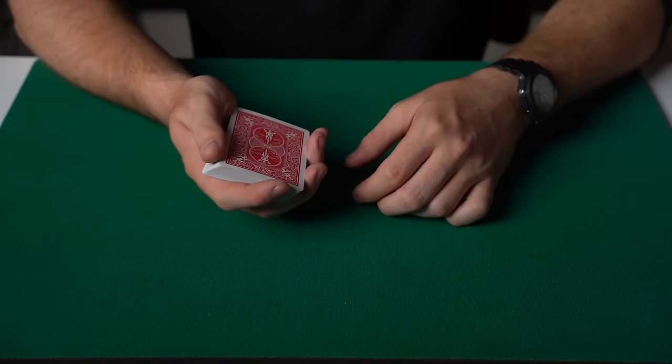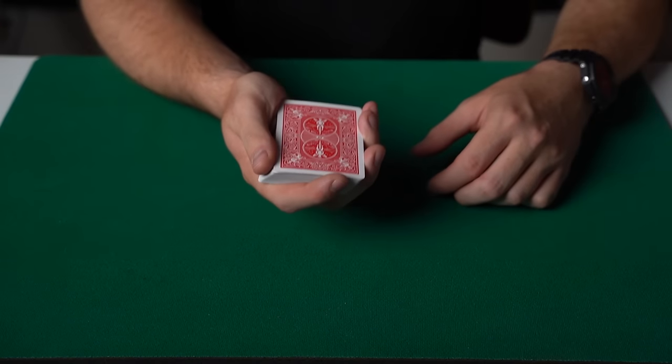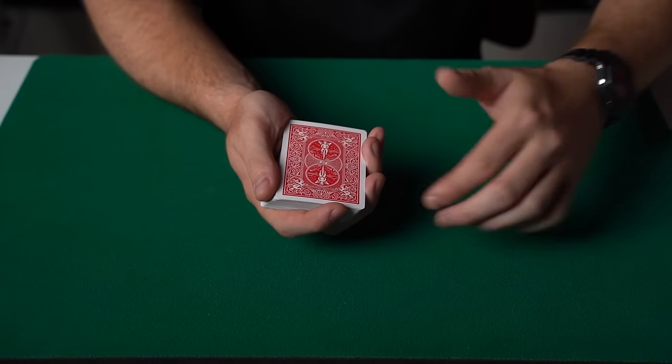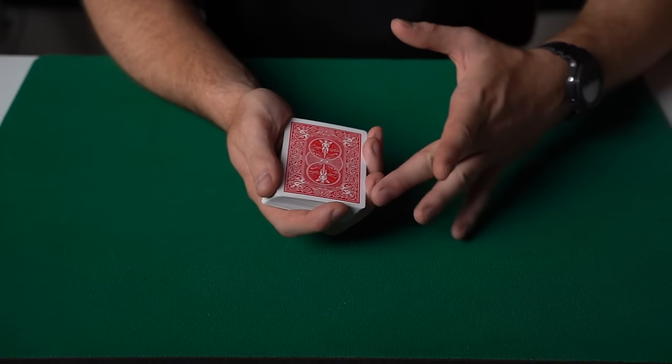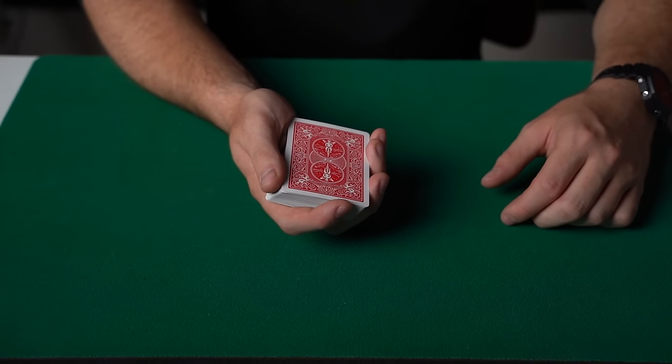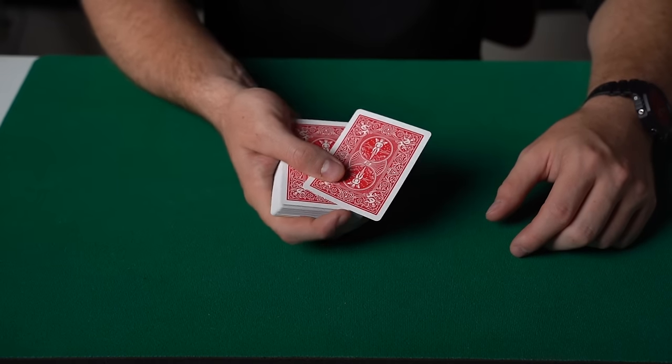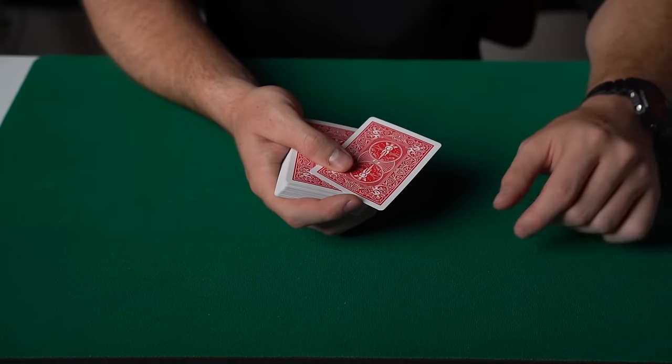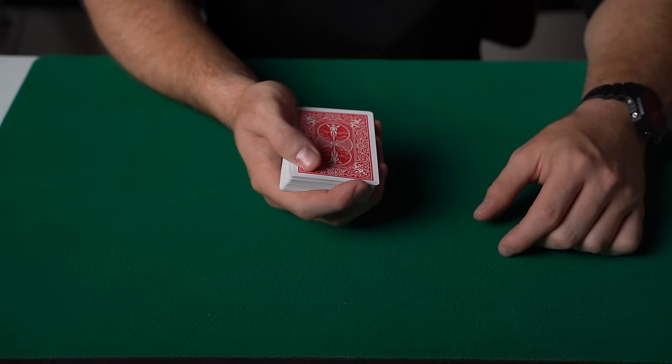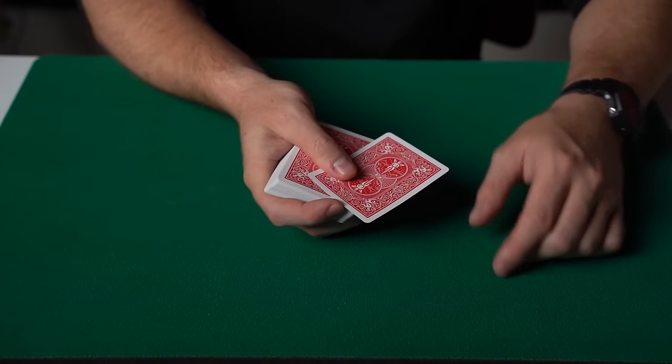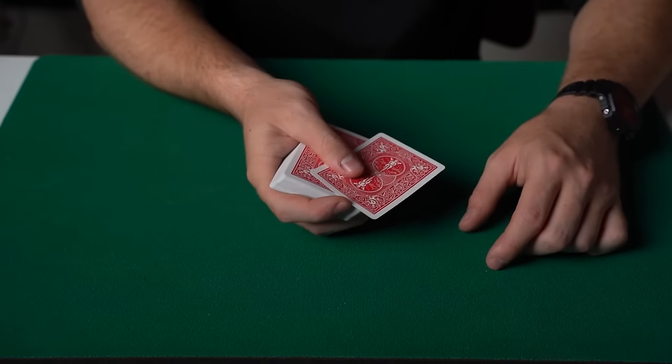So the secret to this effect is very simple. All you need to do is hold the deck in what is known as mechanics grip. So you've got your thumb along one edge, the first finger over the top of the deck, and these three fingers down the side. Then take the top card and place it to the side just like this, and all you need to do is hold it with your thumb and practice pulling it flush with the rest of the cards. So just do this over and over again, and you want to just get really comfortable doing this.